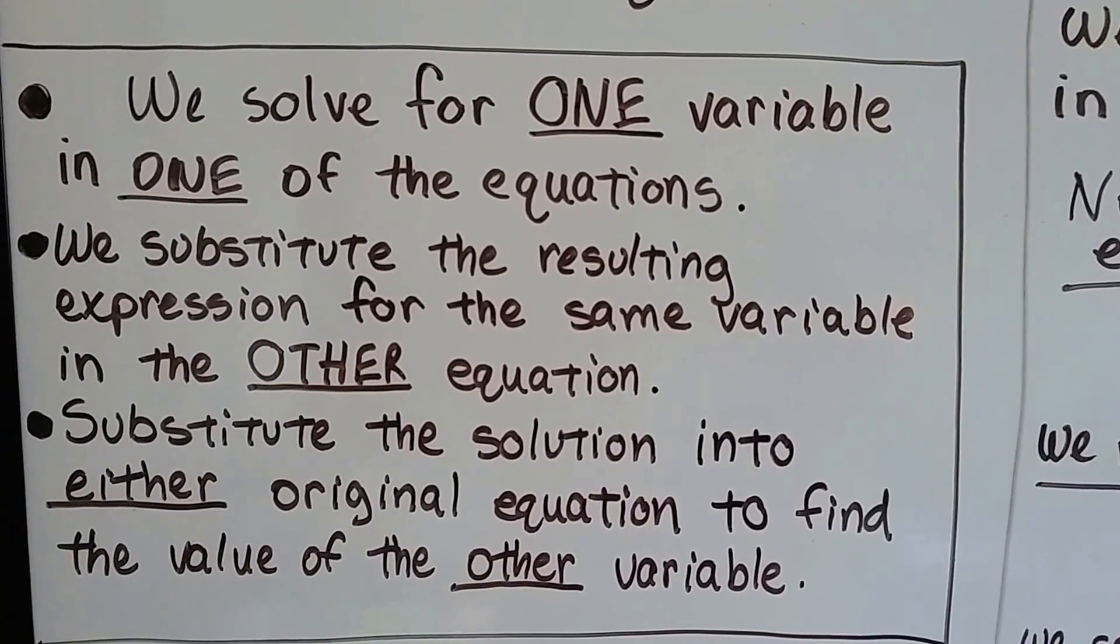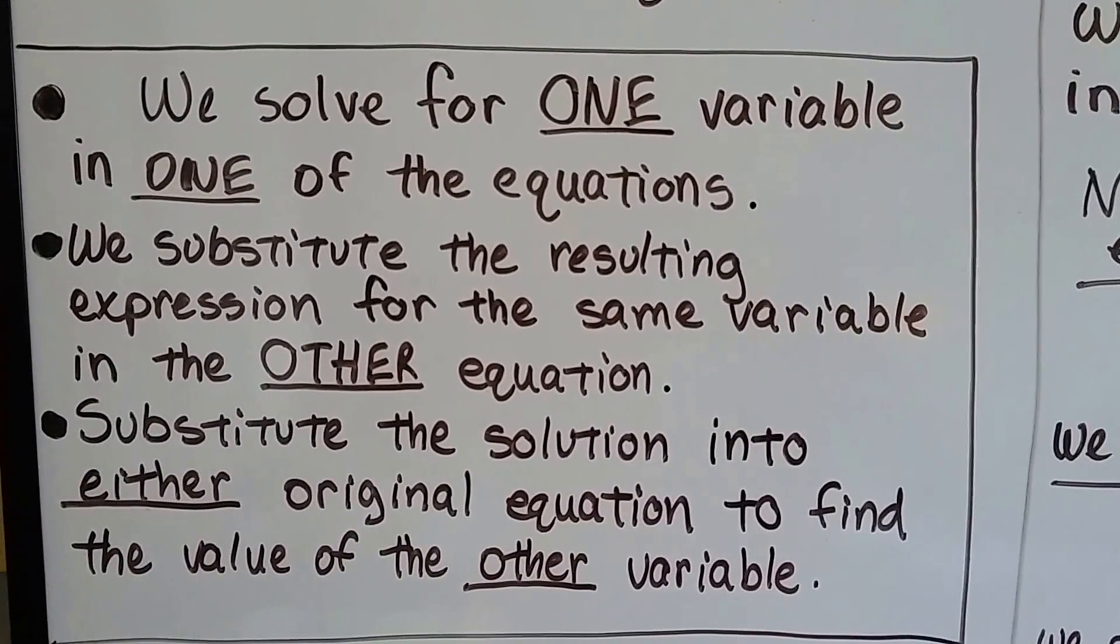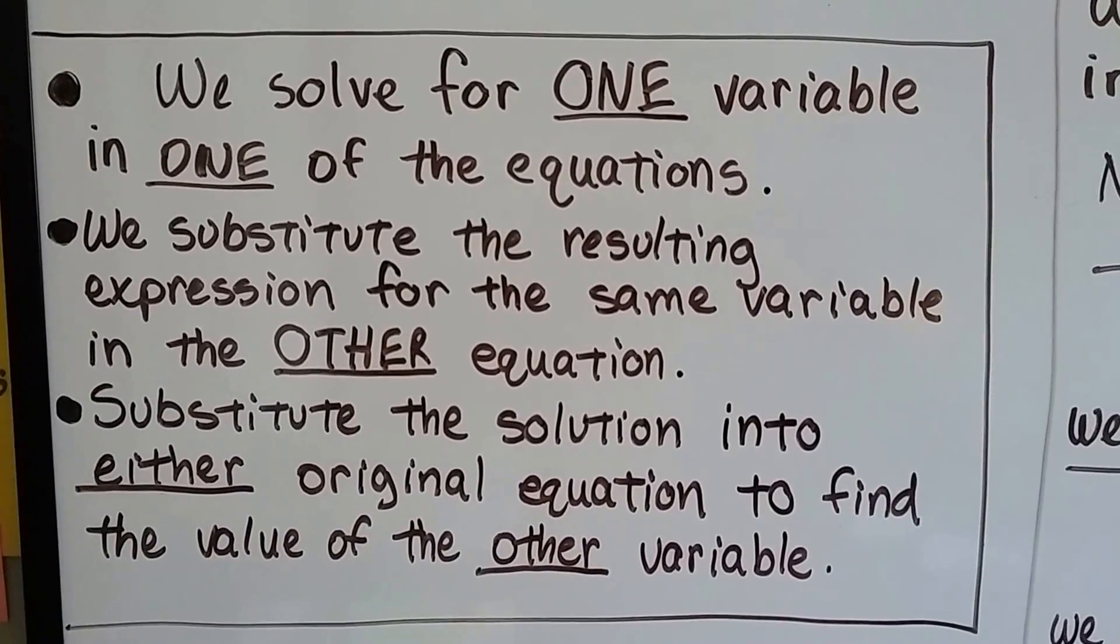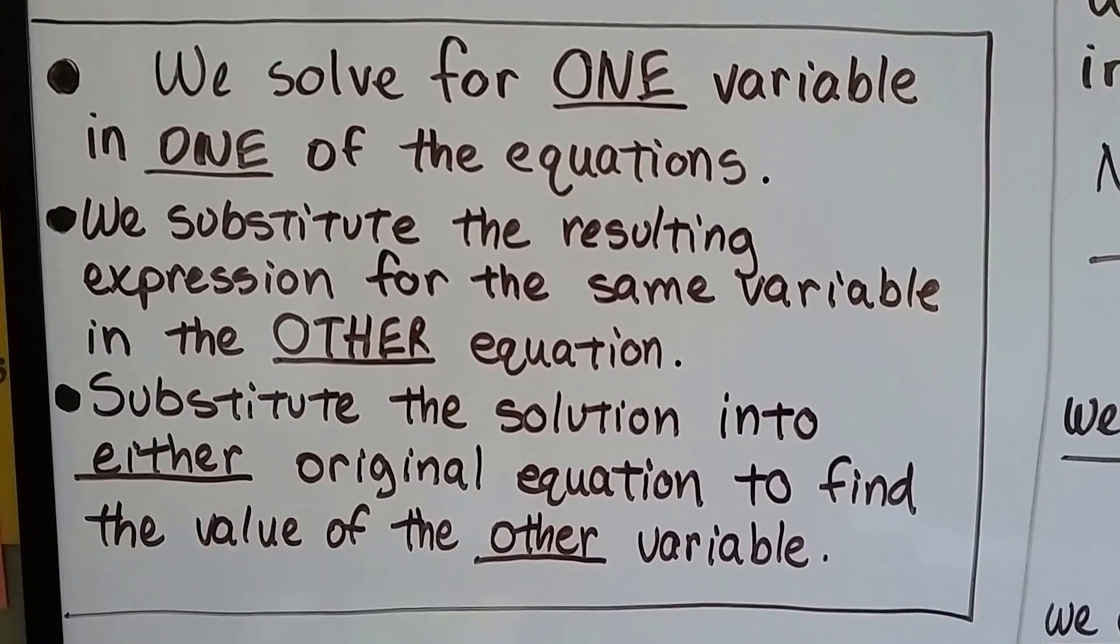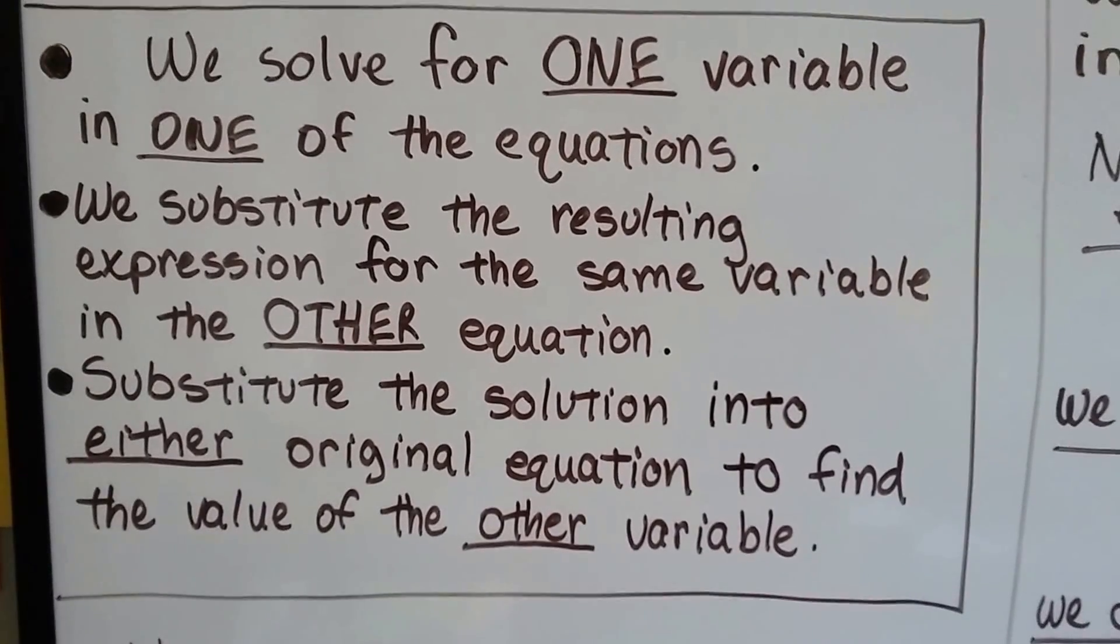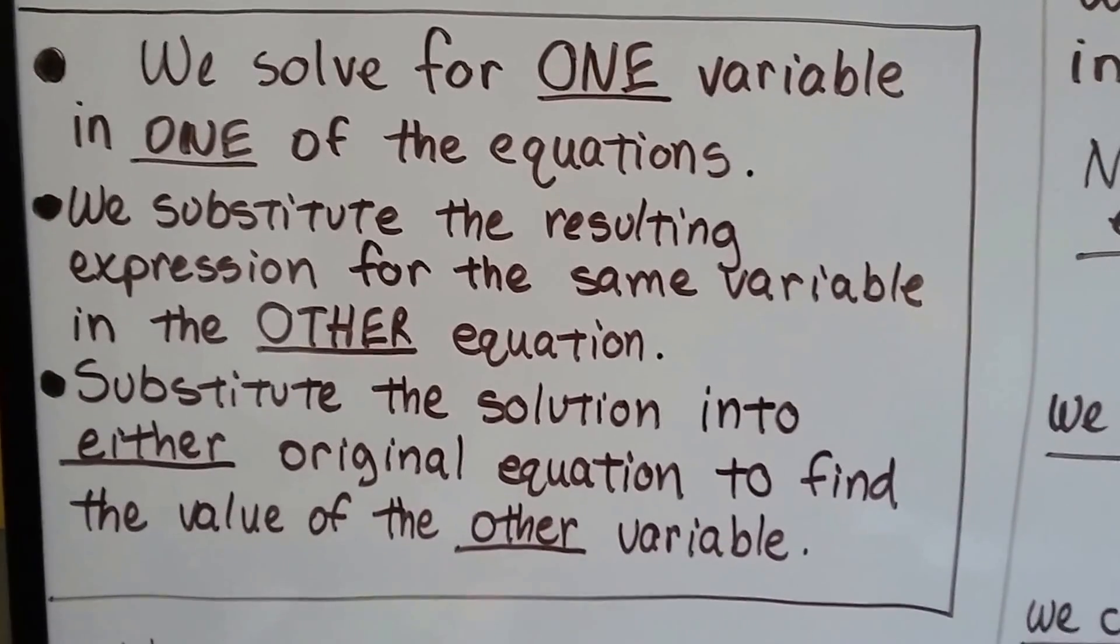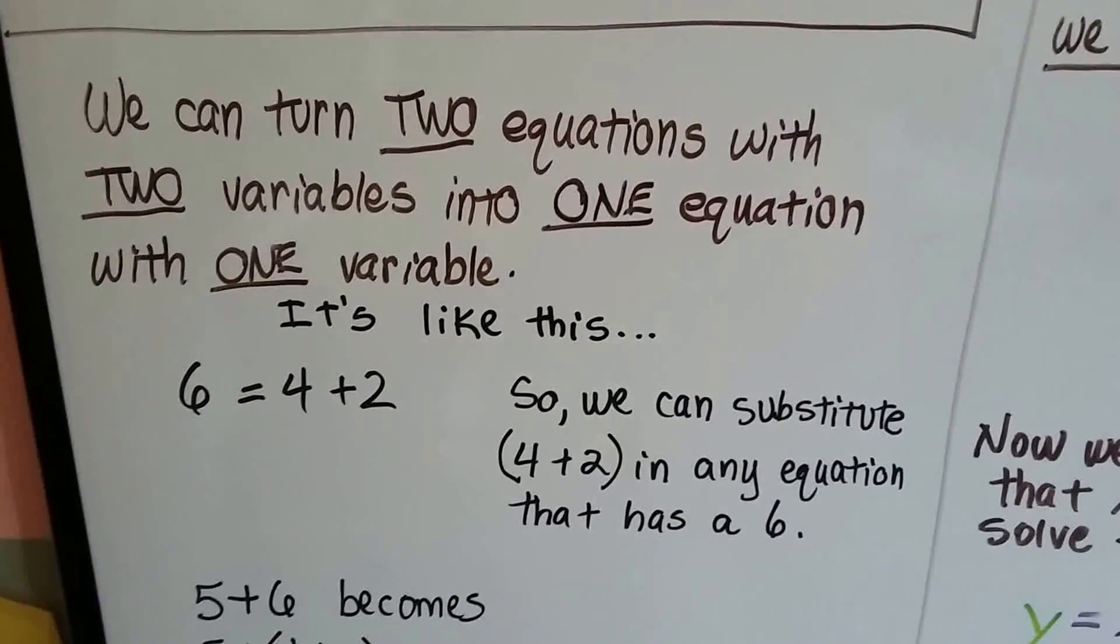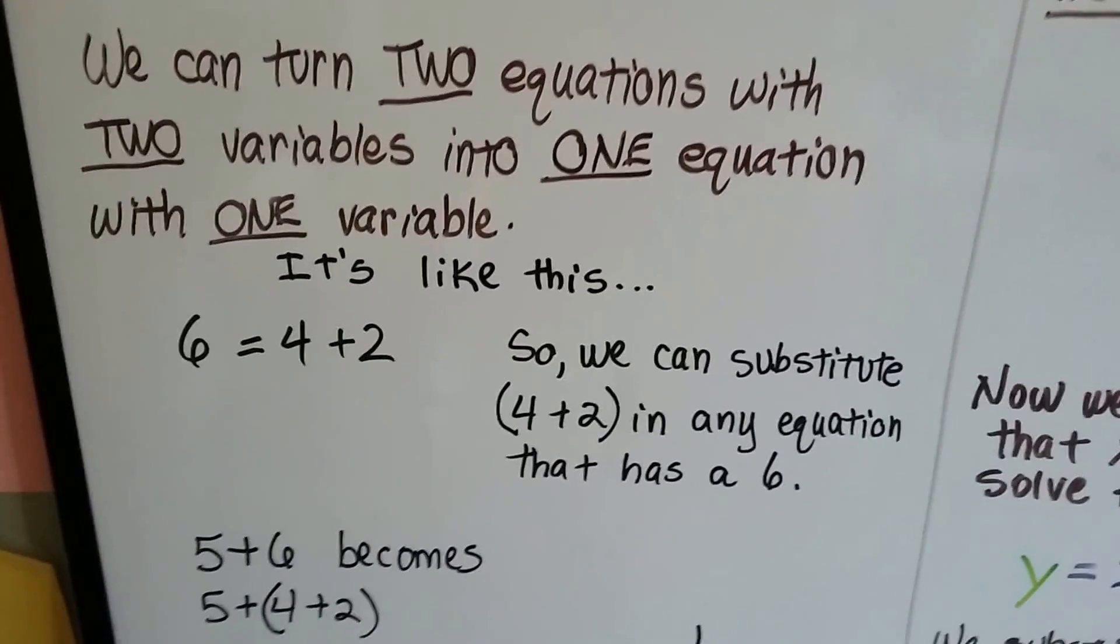We solve for one variable in one of the equations. We substitute that resulting expression for the same variable in the other equation. We substitute the solution into either original equation to find the value of the other variable. Are you confused? Alright, I'll explain it. Don't worry. We can turn two equations with two variables into one equation with one variable.